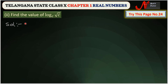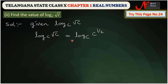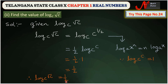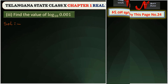Next, find the value of log √c base c. We write log √c base c. Since root means 1/2, this equals log c^(1/2) base c. Applying the power rule, we get 1/2 times log c base c. Since log c base c equals 1, this becomes 1/2 times 1, so log √c base c equals 1/2.